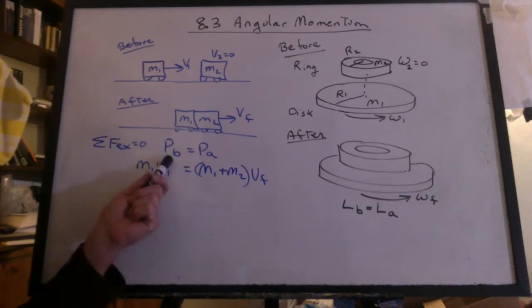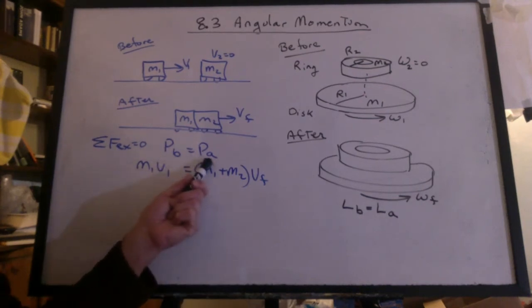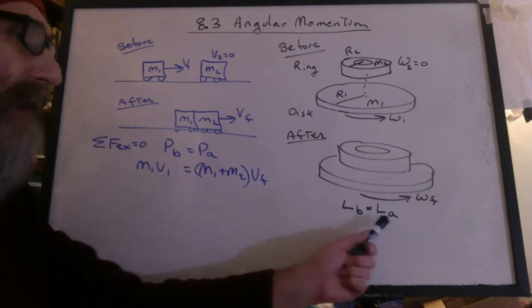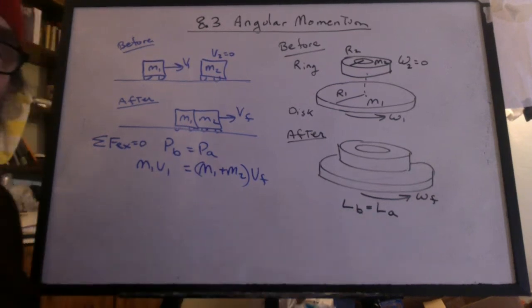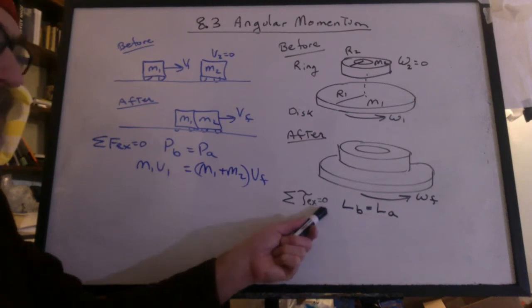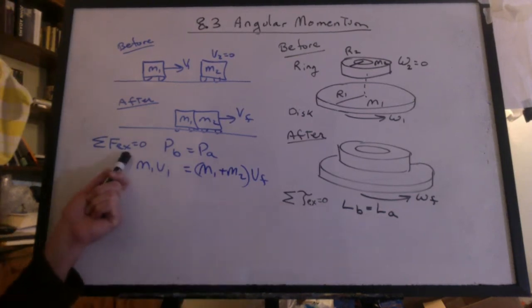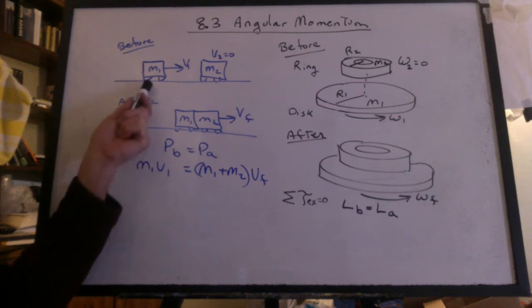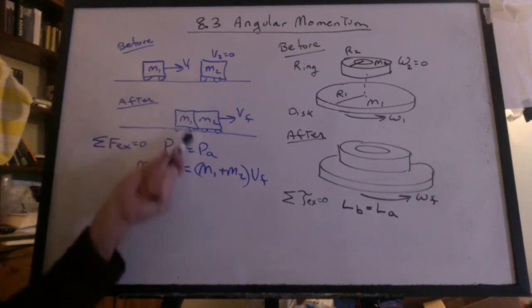Just like we said linear momentum before equals the linear momentum after, we can do the same for angular momentum. As long as the sum of the external torques equals zero. Over here, we have the sum of the external forces equals zero. Well, that's why we had these wheels. It won't work if there's outside forces stopping this motion.